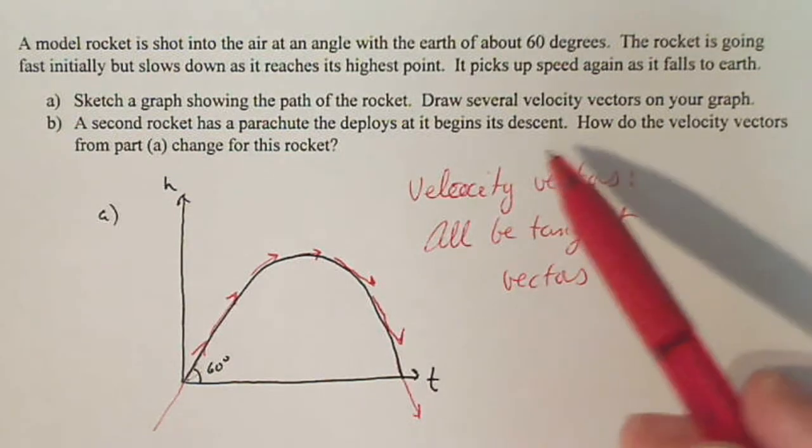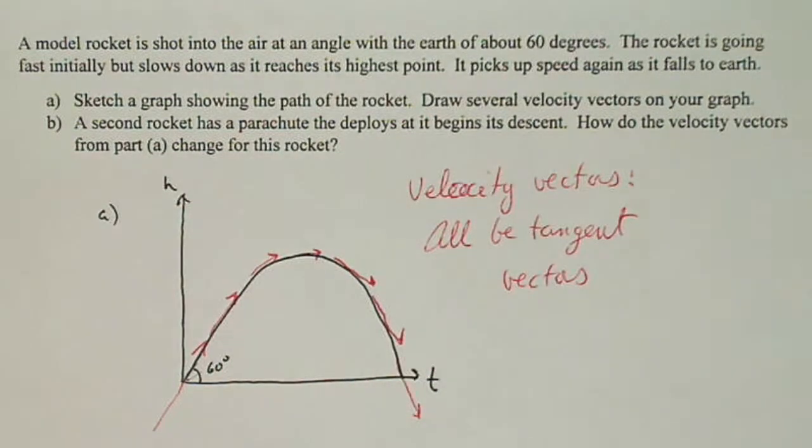Well, basically all the parachute does is slow the rocket's descent down. So the only thing that will change with the velocity vectors will be their length. So I would say in part B,